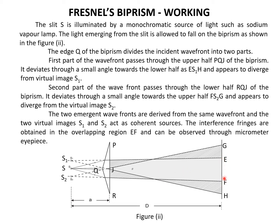In the overlapping region EF, we will observe the interference fringe pattern that can be studied through the micrometer eyepiece. A single light source is divided into two parts at the vertex and they overlap again. By the division of wavefront, the interference fringe patterns are formed.